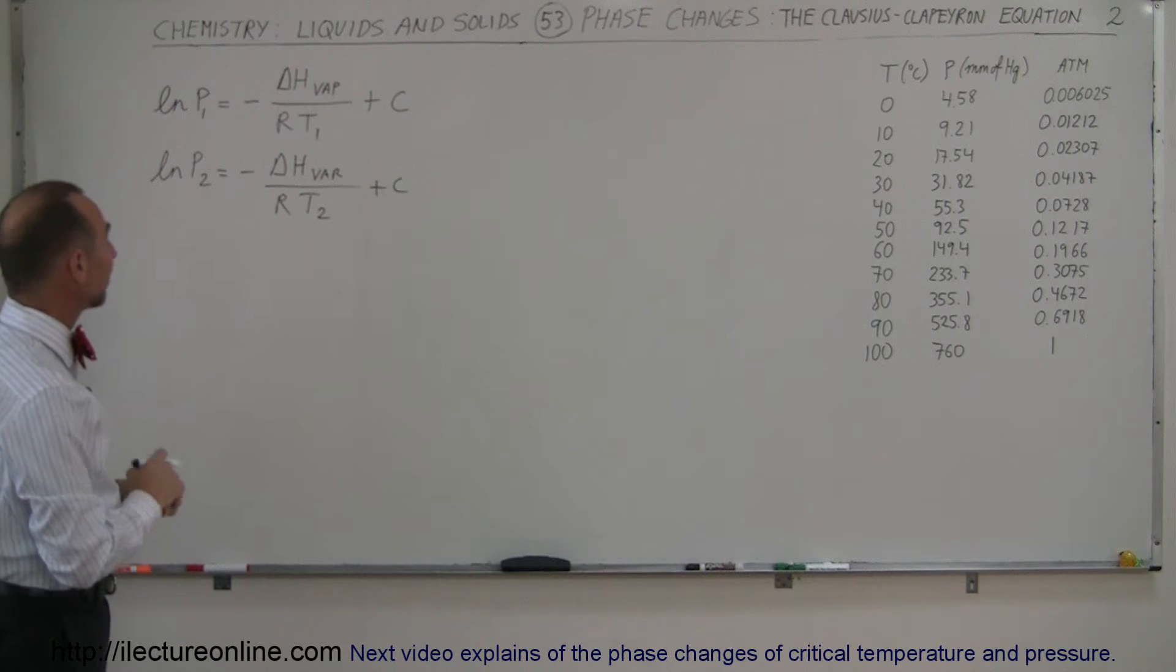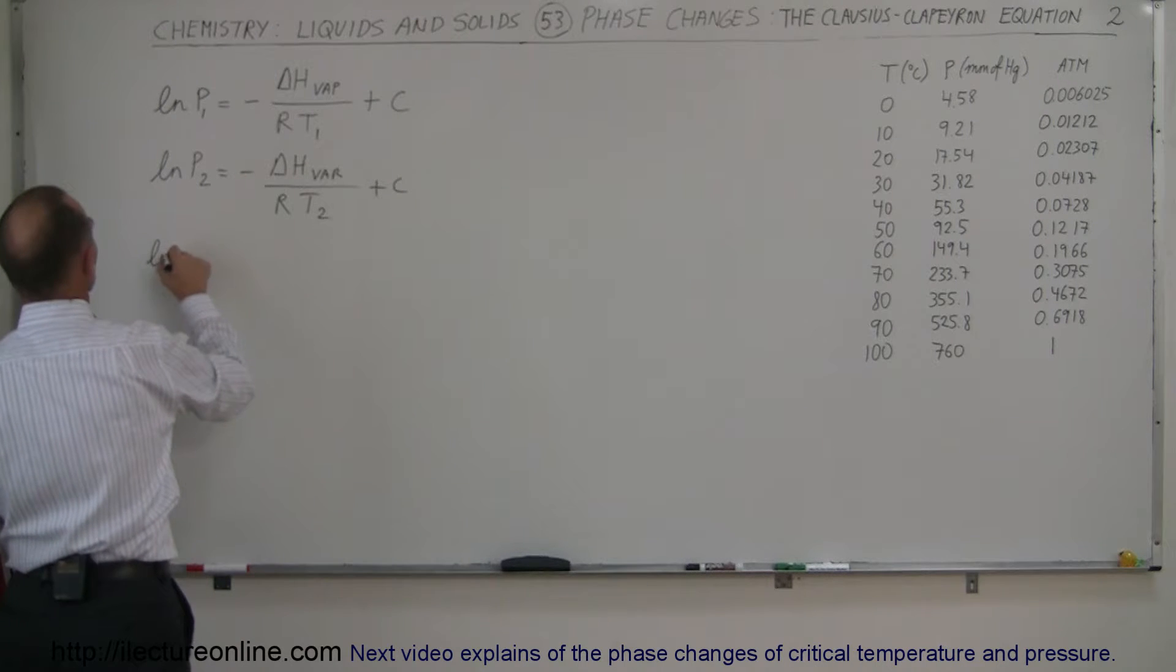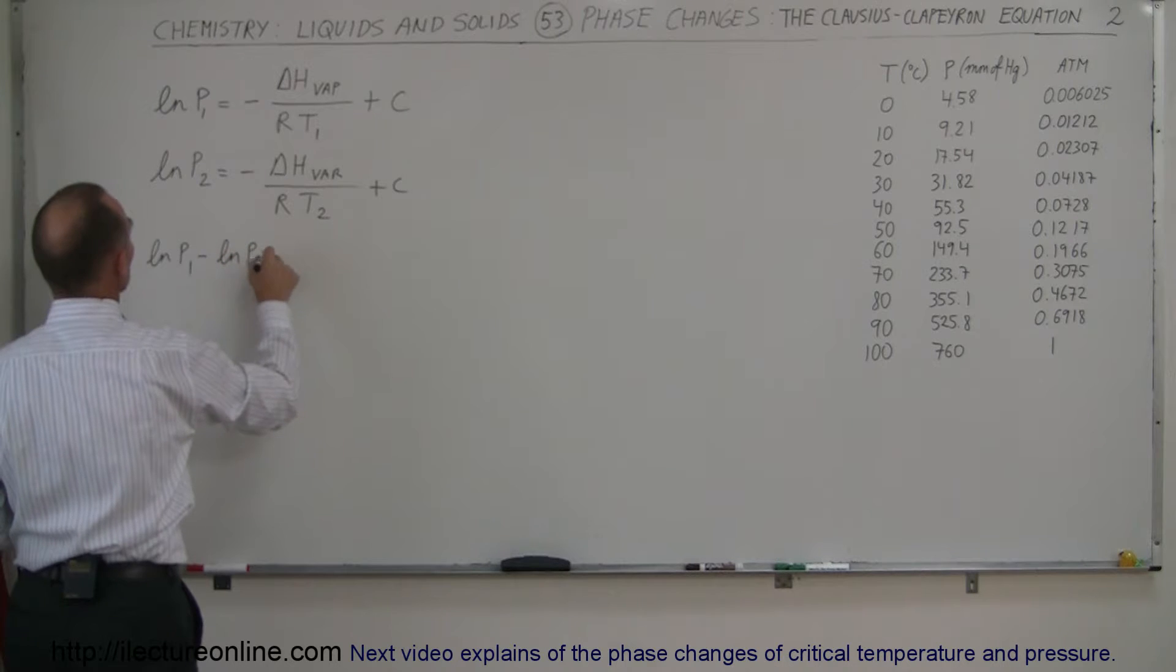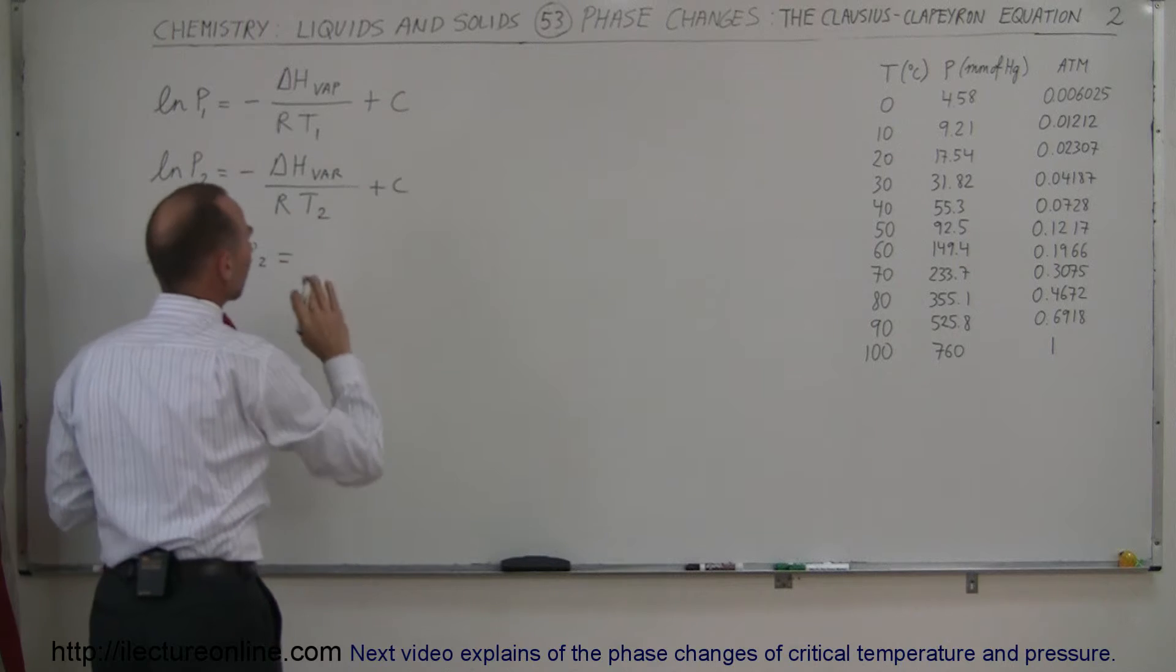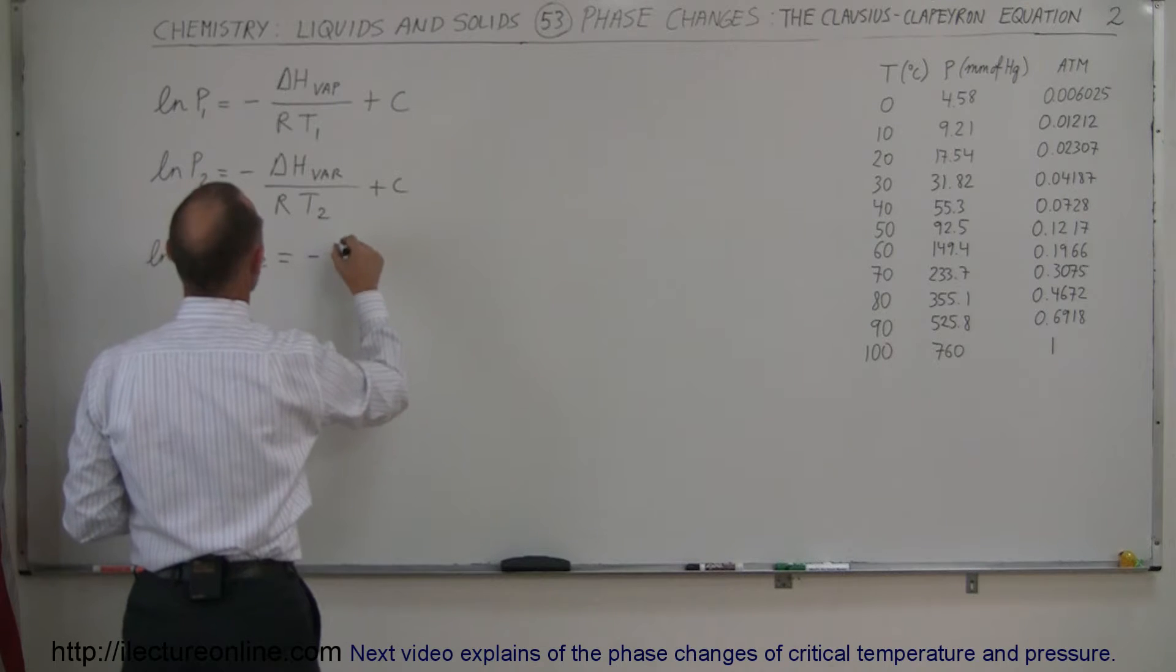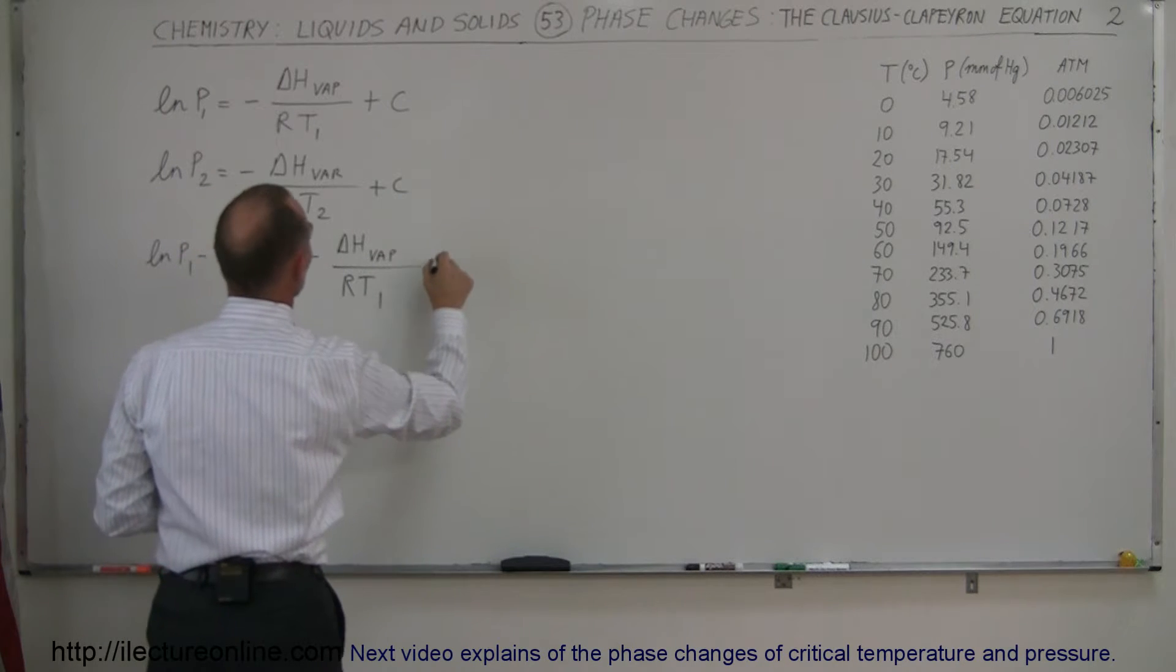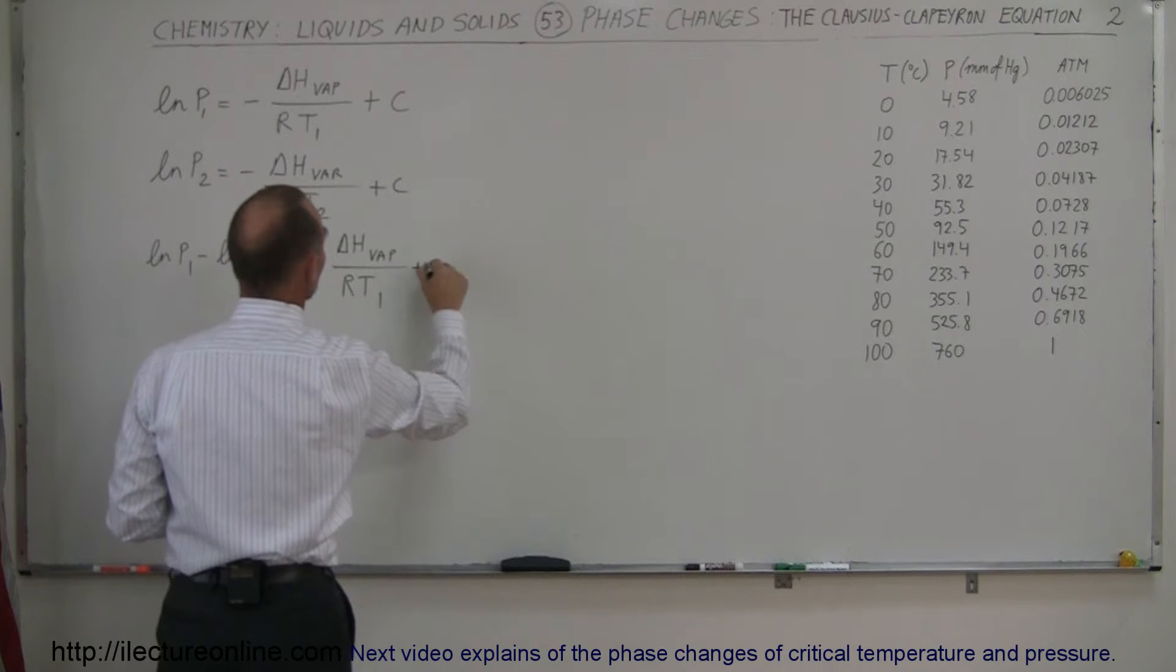So now what happens if I take the difference between the two? I write the natural log of P1 minus the natural log of P2. So I'm subtracting this from that. There's a reason why we do that, because when we do that the constant will drop off, and that's kind of a nice thing.